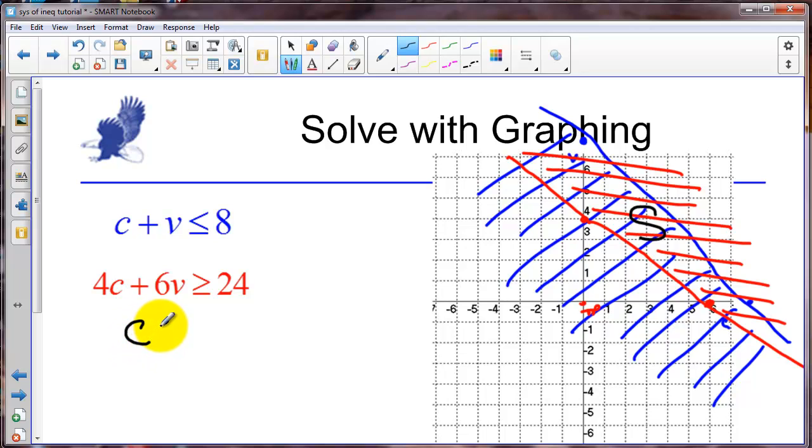So c should be greater than or equal to 0. And v cannot be negative also, greater than or equal to 0. So c greater than 0 is the vertical line here. And greater than 0 would be positive. So we're to this side of the line.